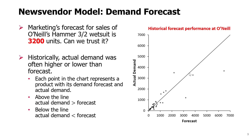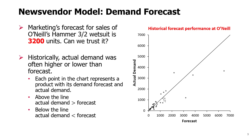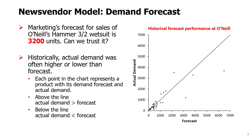Here you see a chart that represents past forecasting performance of our marketing department. Every point corresponds to one product with a certain forecast. On the horizontal axis you see the forecast, and on the vertical axis you see the actual demand. The diagonal line corresponds to perfect forecasting — points on the line represent cases where forecast and actual demand were equal.